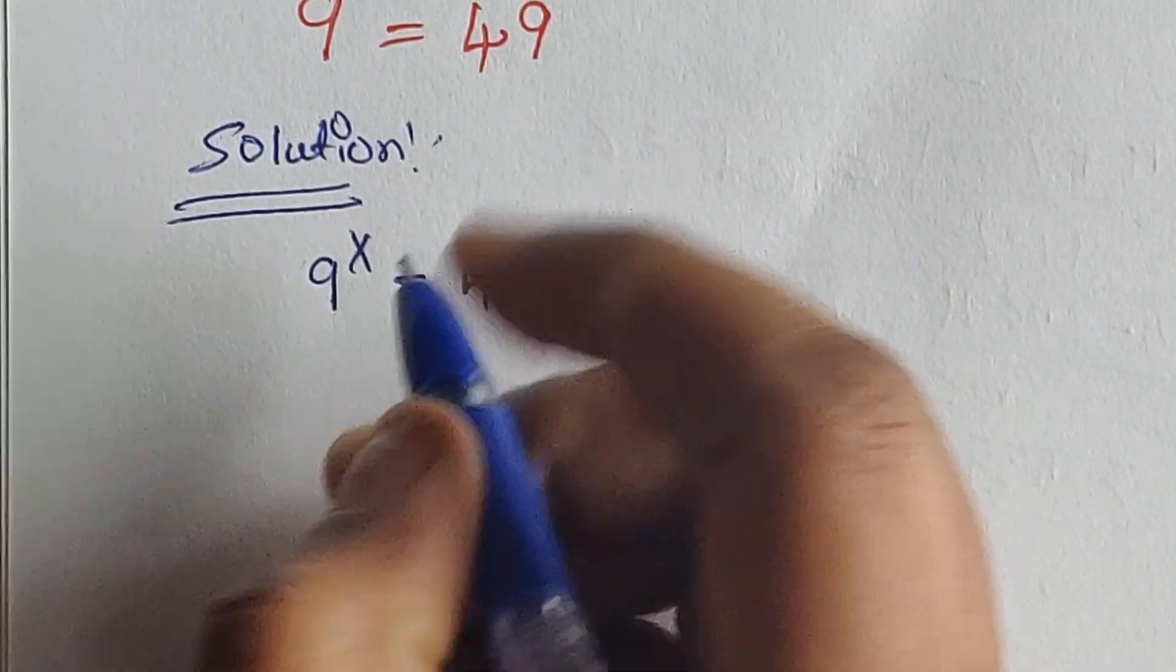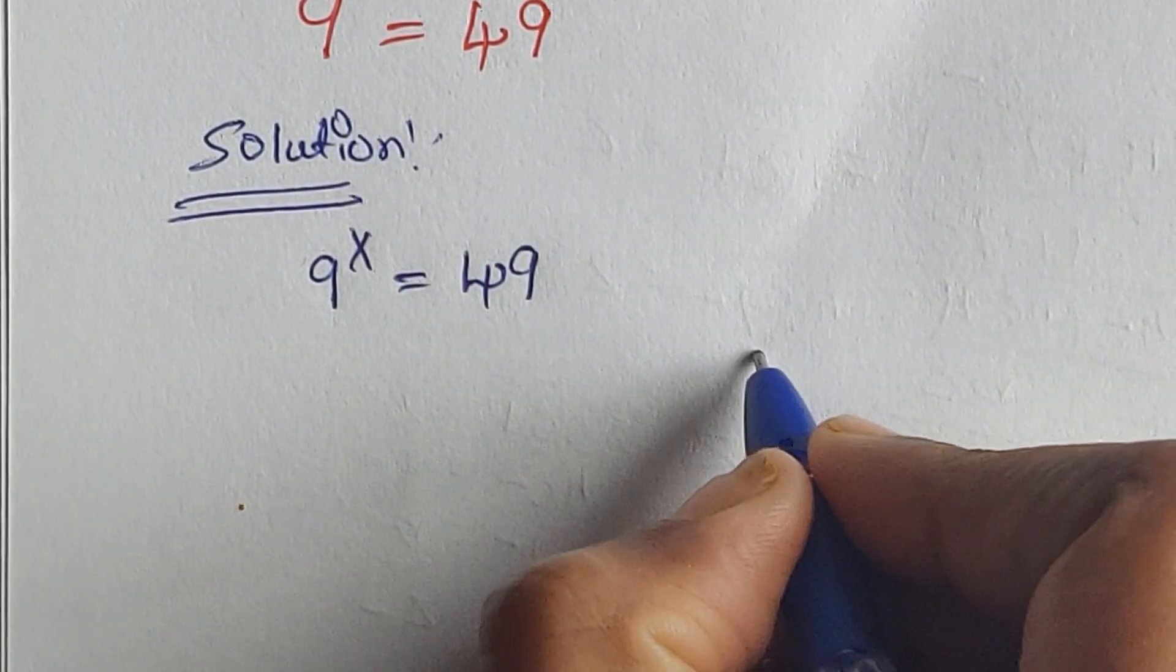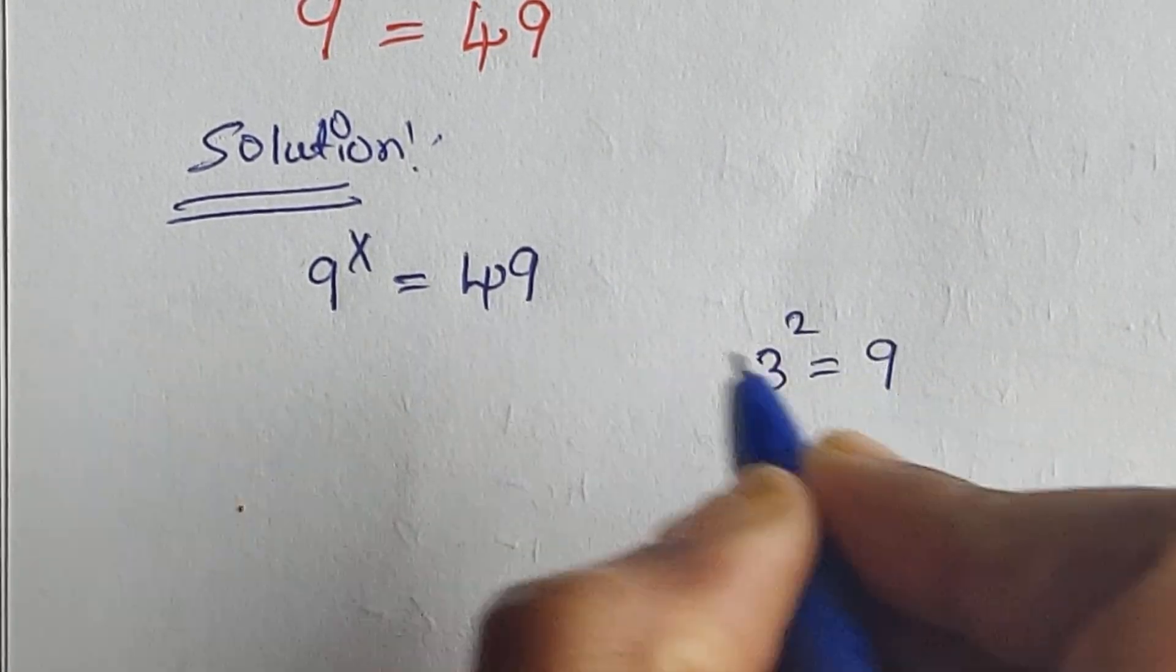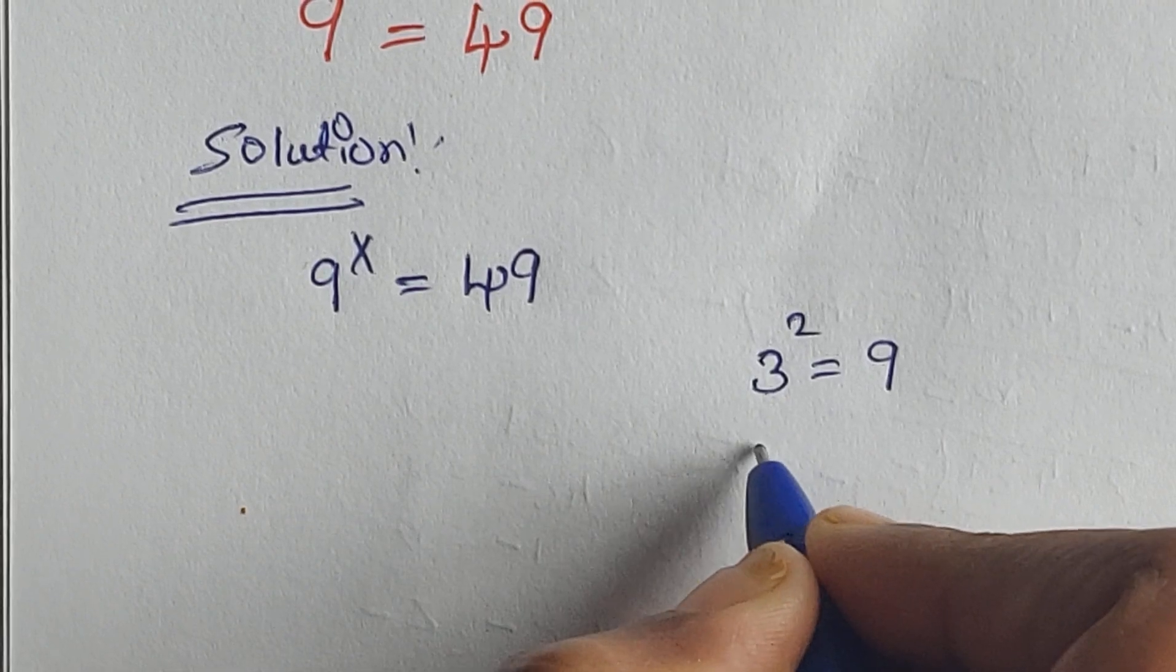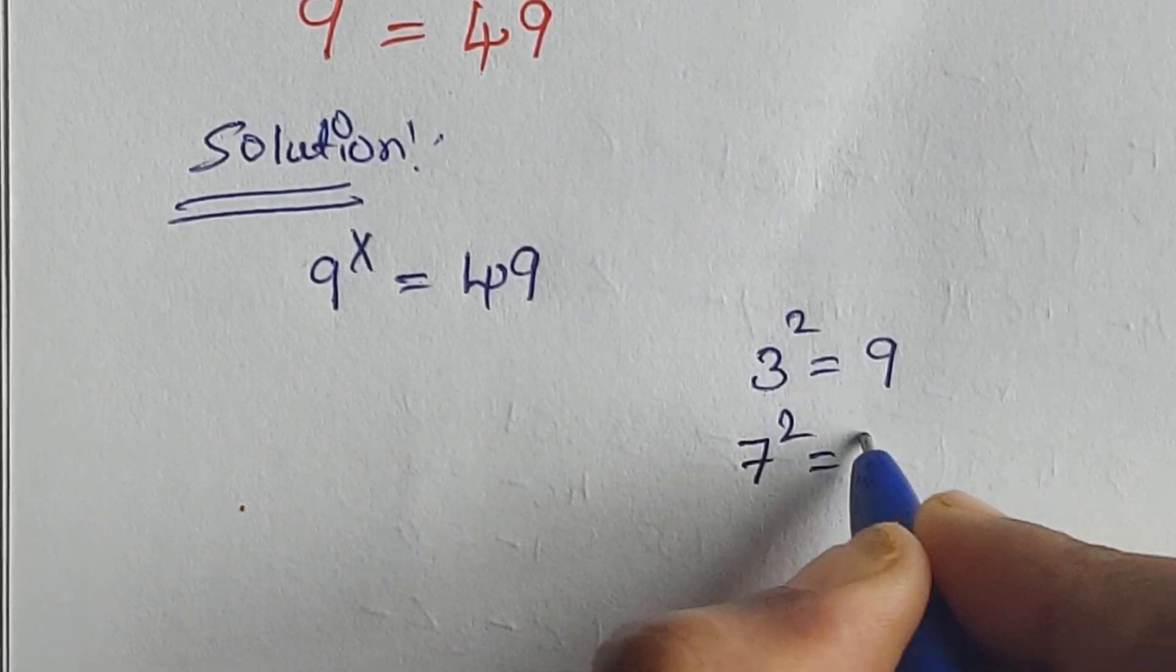So 9 can be written as 3 squared equals 9, and 49 can be written as 7 squared equals 49.